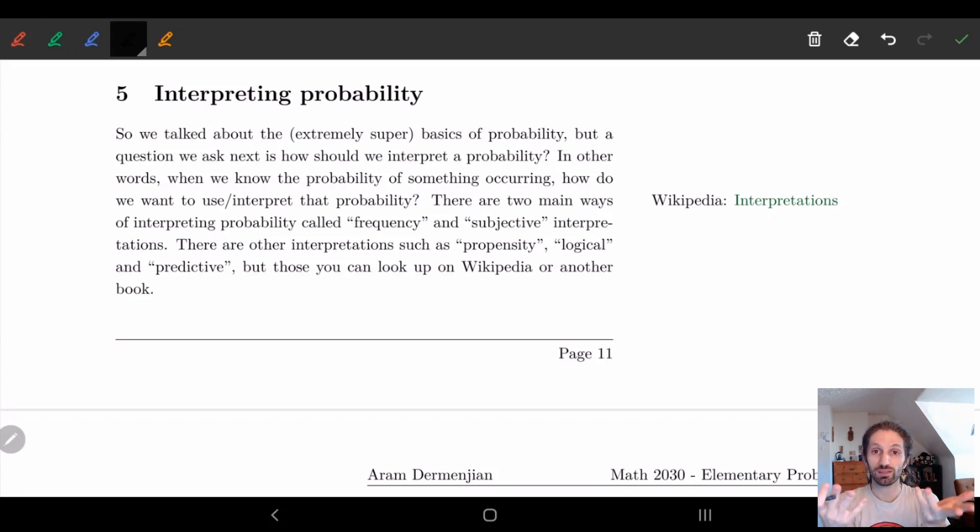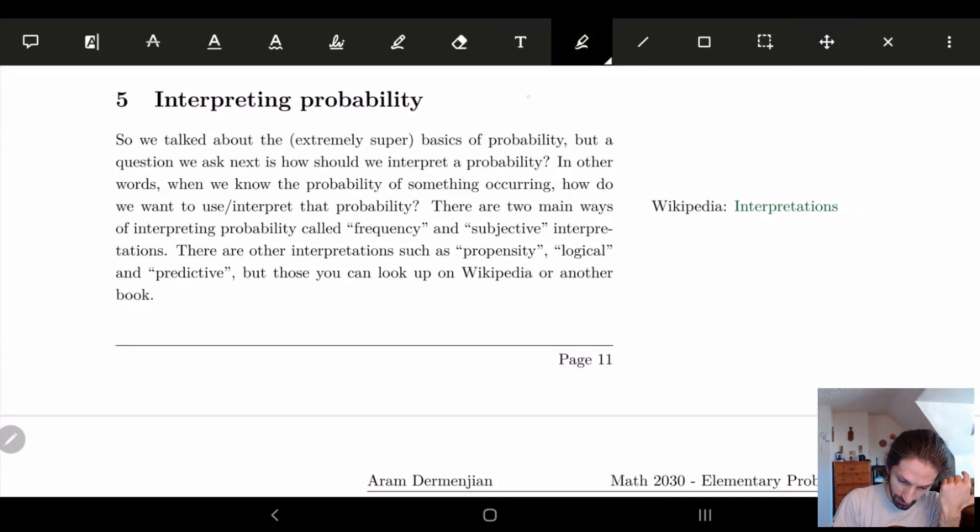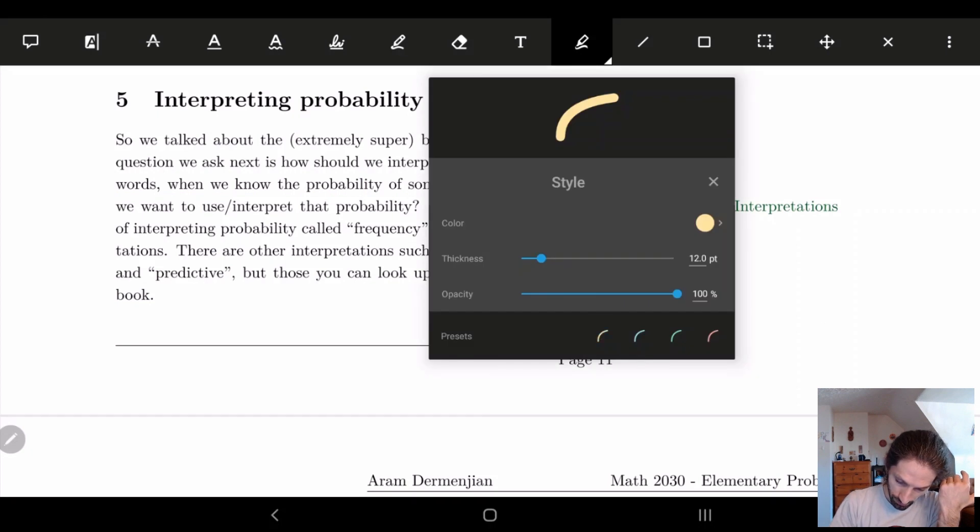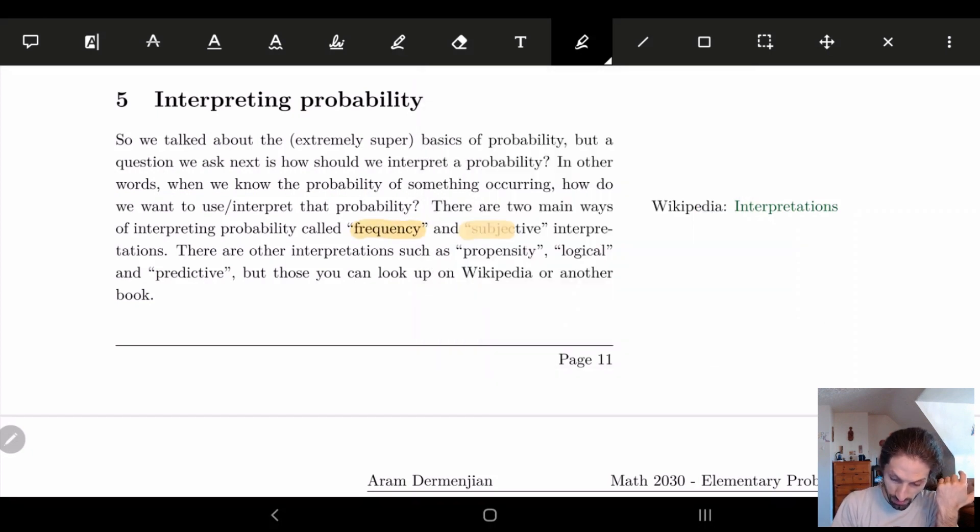So if we're thinking about probability, how do we know how we're interpreting it? And there's two main different ways of interpreting probability. One of it is called frequency probability. One is called frequency and another is called subjective interpretations of probability. Now there's other interpretations like propensity, logical, predictive, etc. You can go to Wikipedia and get a much more thorough list. But for us we're going to be focusing on just the frequency interpretations and the subjective interpretations. In particular we're going to look at frequency most of the course.